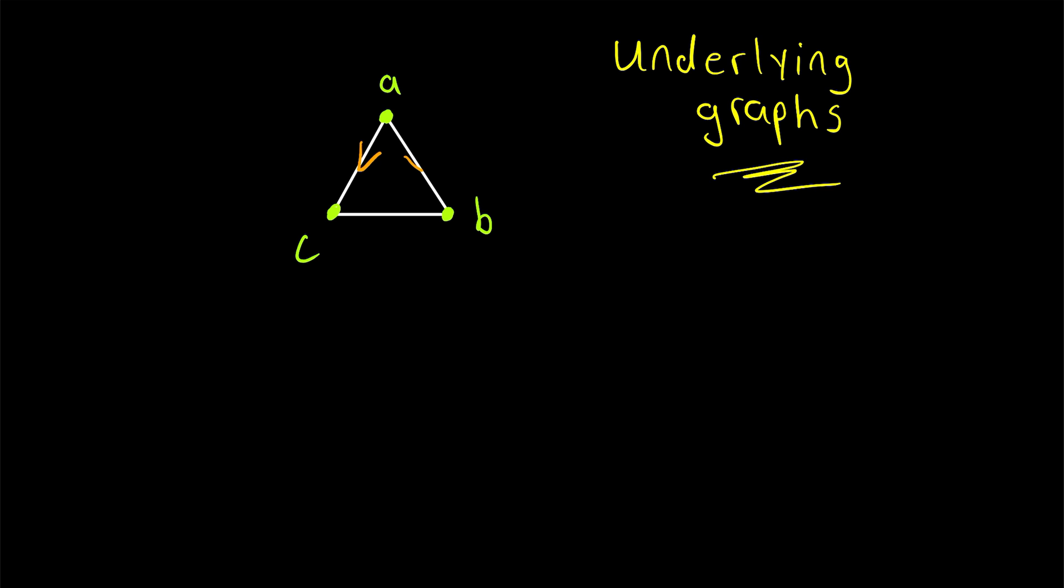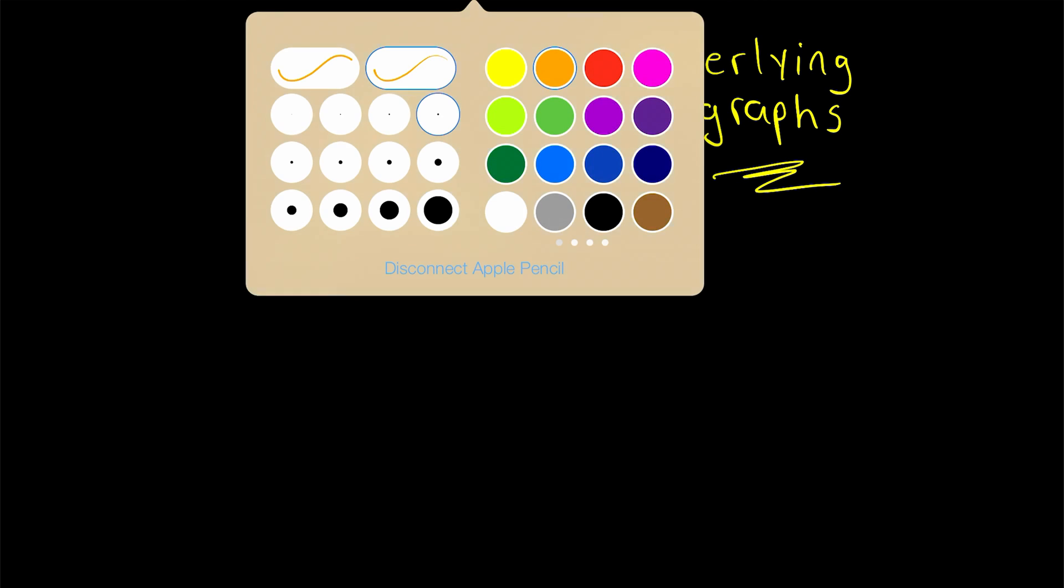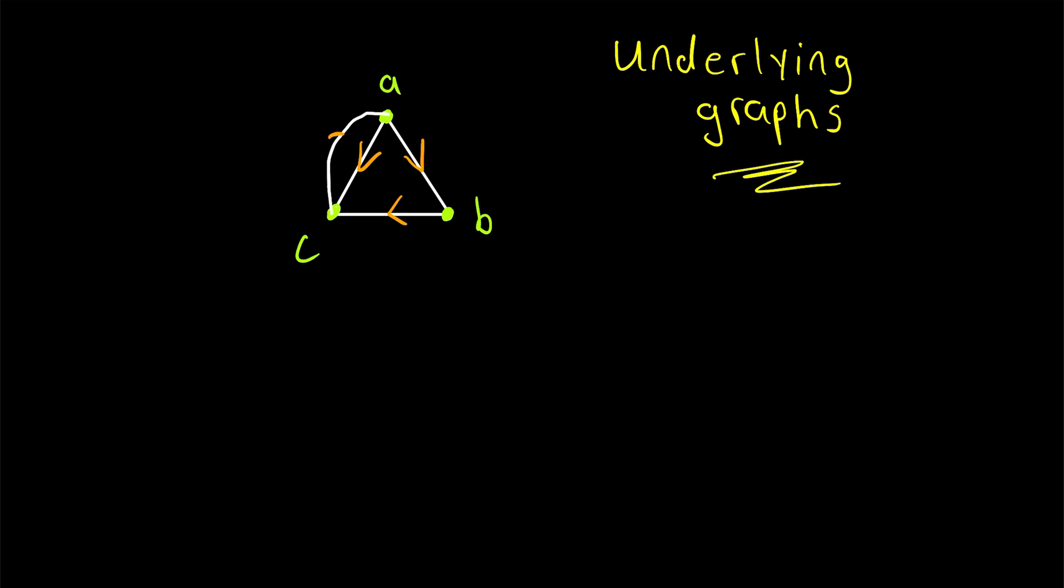However, you might realize, upon thinking about this a little bit, that there is some room for ambiguity here. What happens if, instead of just having an arc going from A to C, we also have an arc going from C to A? If that happens, then what does the underlying graph of this directed graph look like?